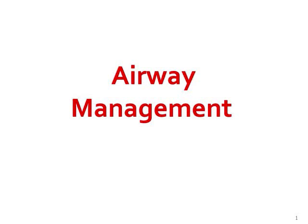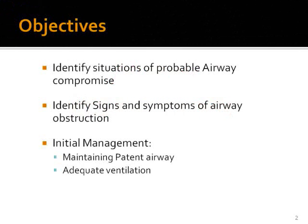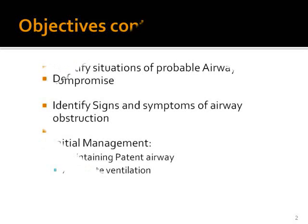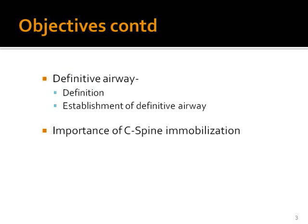Airway Management. This is an important lecture because it deals with the first priority in the primary survey, which is the airway. The objectives are: to identify situations where the airway could be compromised, identify signs and symptoms of airway obstruction, and initiate management of a compromised airway. We also need to define the definitive airway, how to establish it, and mention the importance of cervical spine immobilization during airway management.